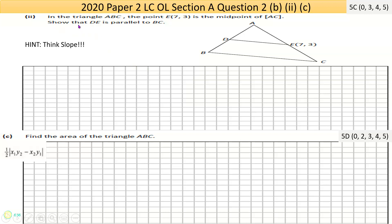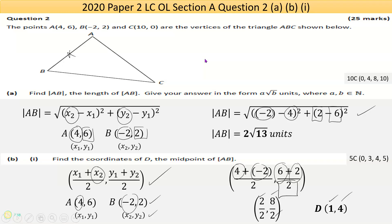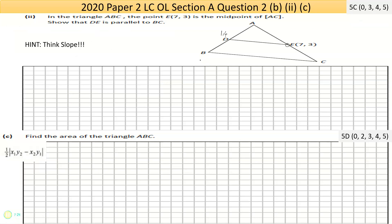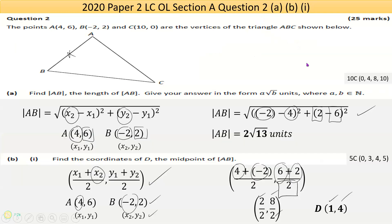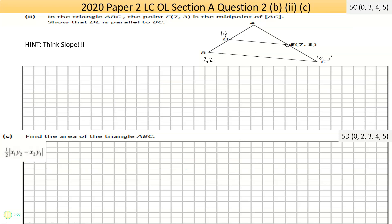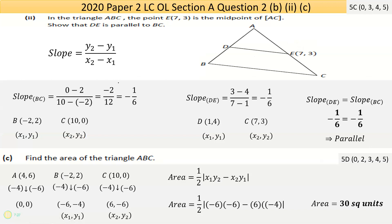Now part 2 says in the triangle ABC, the point E, given that 7, 3, is the midpoint of AC. Show that DE is parallel to BC. I know D, I've literally just found it, that's 1, 4. B was minus 2, 2, and C was 10, 0. Simplest way: if they're parallel, their slopes should be equal.